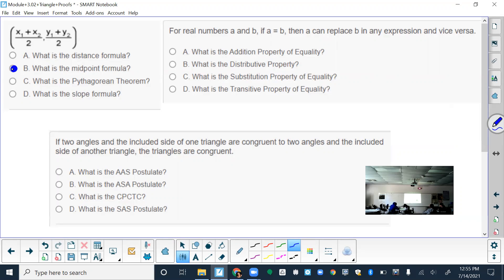The next one, we have real numbers A and B. If A is equal to B, then A can replace B in any expression in vice versa. That's the substitution property of equality. So if A equals B, then I can replace A and B with each other at any time.